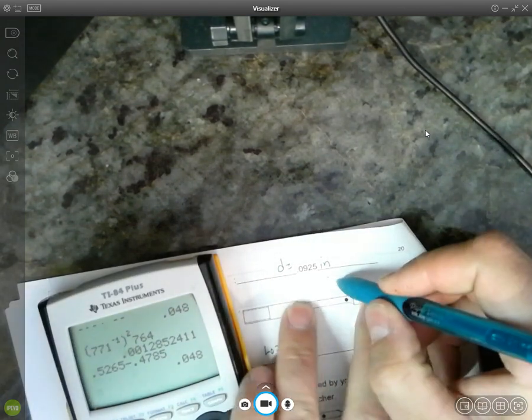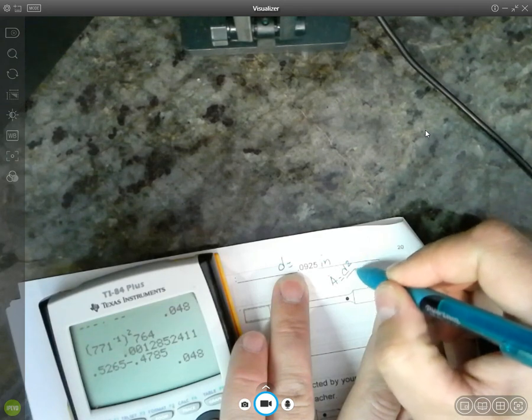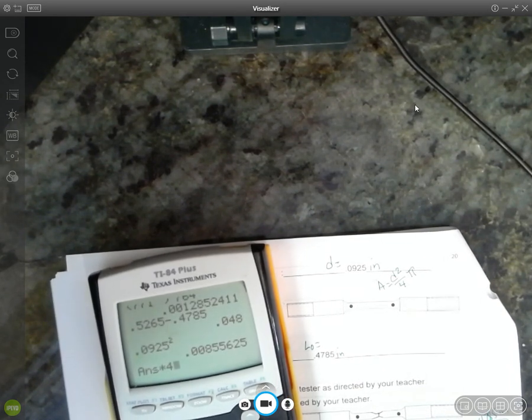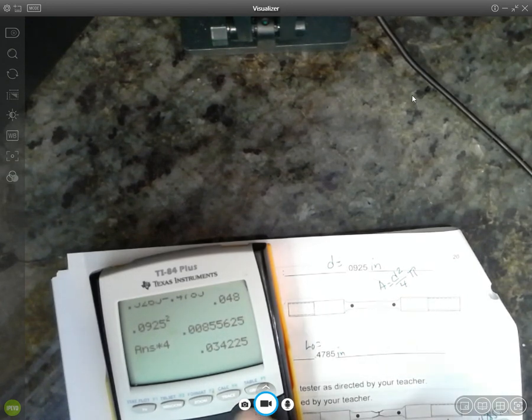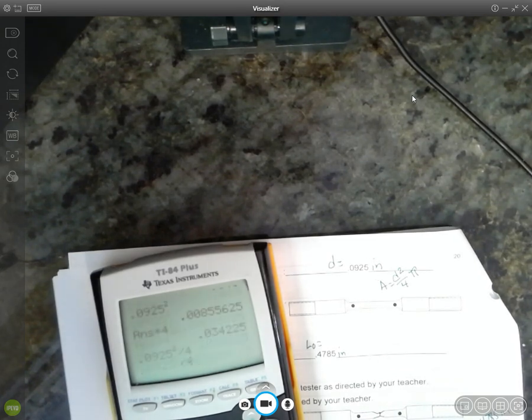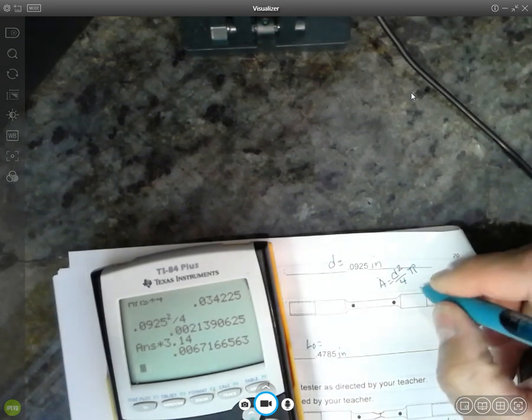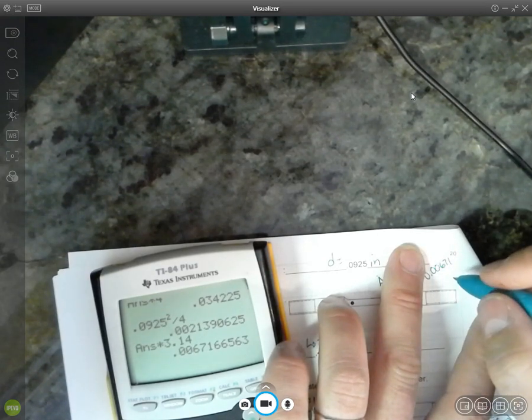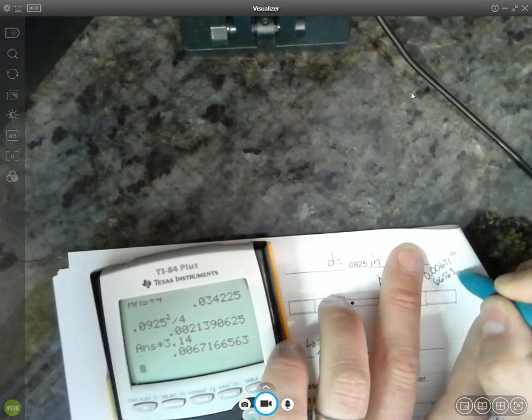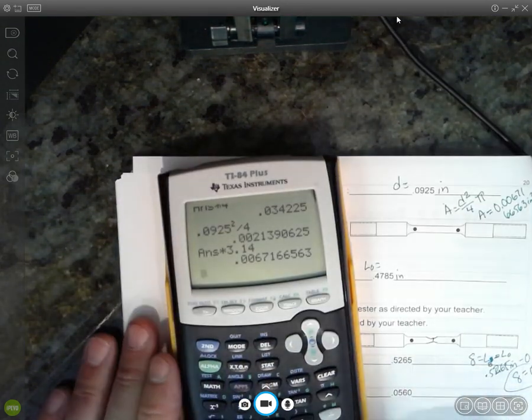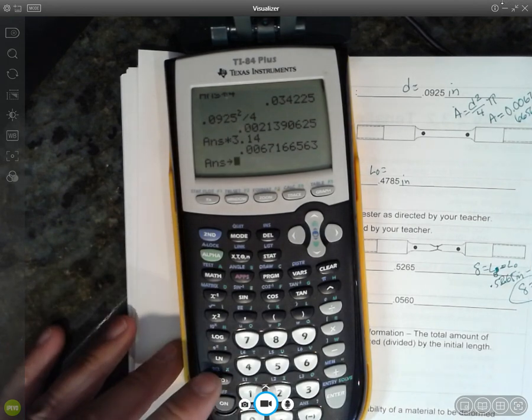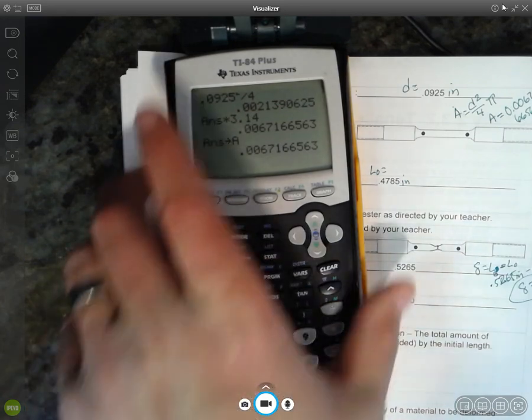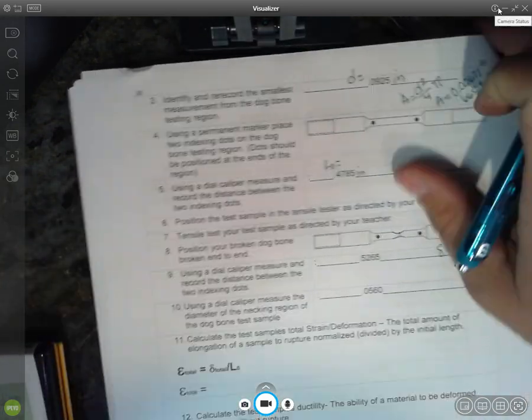And while we're at it, let's calculate area. So up here, area is equal to the diameter squared divided by 4 times pi. So 0.0925 squared times 4. Sorry, oops, that was wrong. Divided by 4 times 3.14. I'm just going to use 3.14 for pi. So area, we got 0.0067166563 inches squared. And because I'm going to use that a lot, I'm going to actually use my store key, which is this one down here. And I'm going to store that as alpha A. So the answer I'm going to store is A for area. Yeah, because I'm going to use it a lot. It's a lot of numbers to type in, so this way I don't have to.